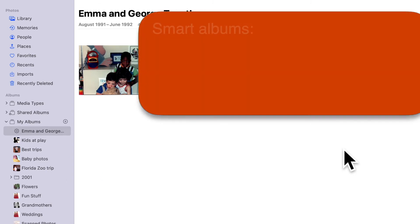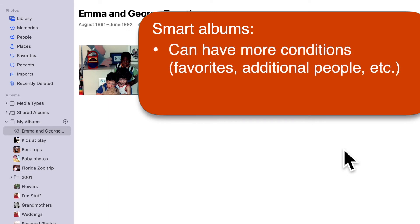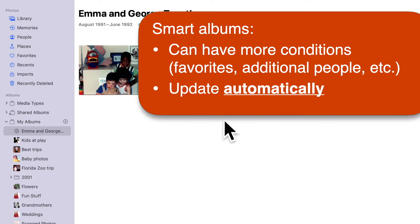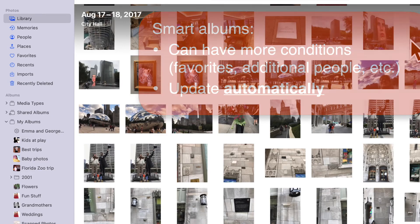You can add more conditions if you want — for example, if you wanted only your favorite photos of Emma and George, or photos that included a third person, or whatever you happen to be looking for. But what makes smart albums really useful is that they update automatically when more photos in your library satisfy the same conditions. Let's see how that works.